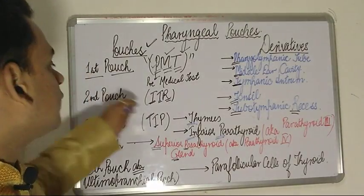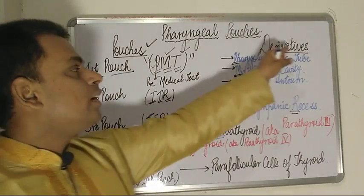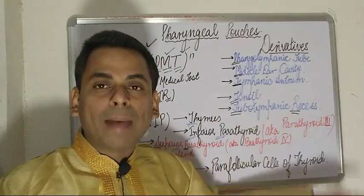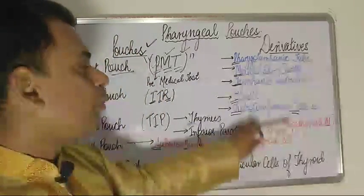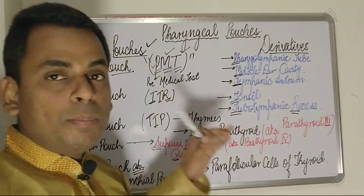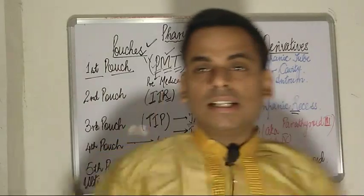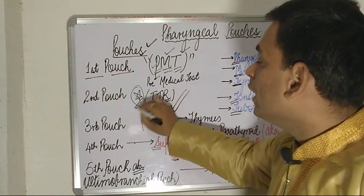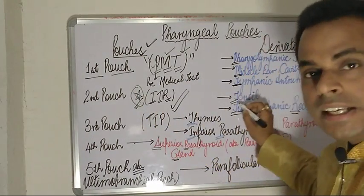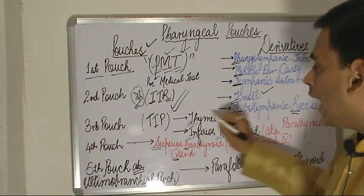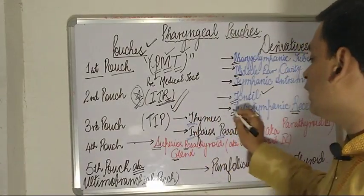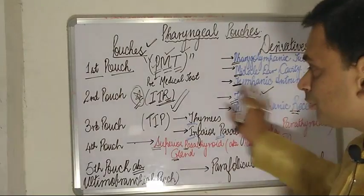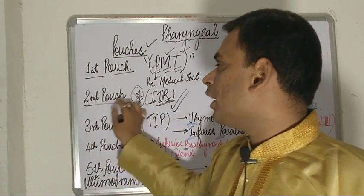Moving on to the second pouch: the derivatives from the second pouch are the tonsil and the tubotympanic recess. The mnemonic for the second pouch is TTR — the first T refers to the tonsil, and TR refers to the tubotympanic recess. This is derived from the second pouch.